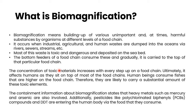For example, zooplanktons feed heavily on phytoplanktons, and insect-eating fishes feed even more on zooplanktons compared to phytoplanktons. As the trophic level increases, the amount of food consumed also increases, and thus the concentration of toxic material increases. Ultimately it affects humans, who sit at the top of most food chains and consume fishes that are higher on the food chain, making them likely to carry substantial amounts of toxic elements such as heavy metals like mercury and arsenic, and pesticides like PCB compounds and DDT.